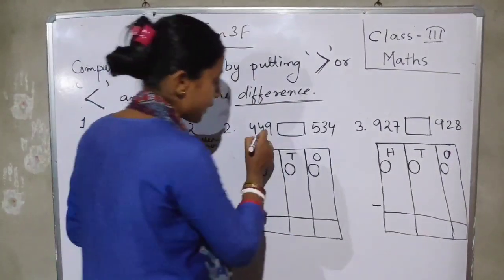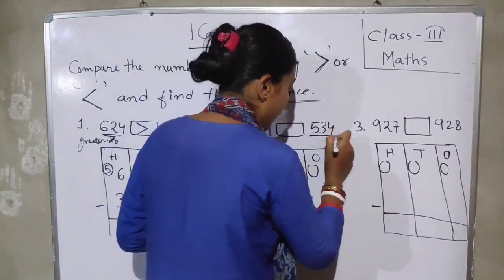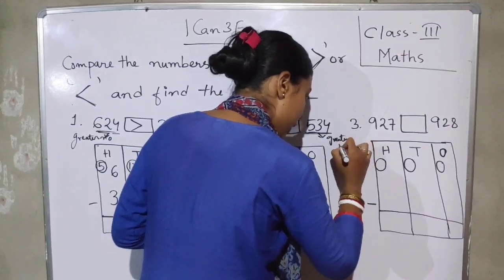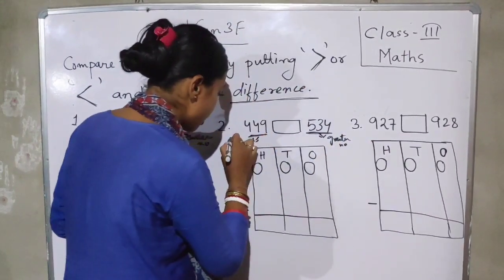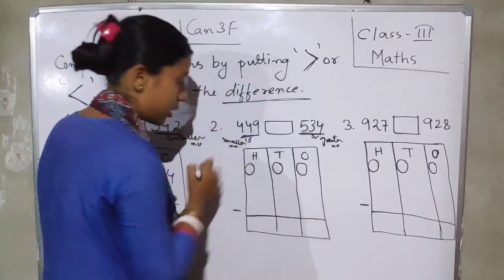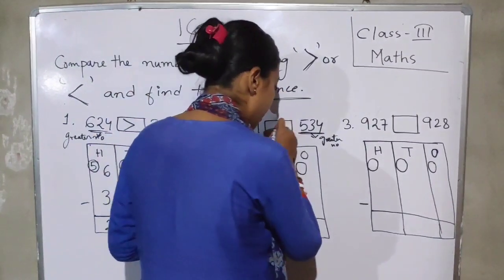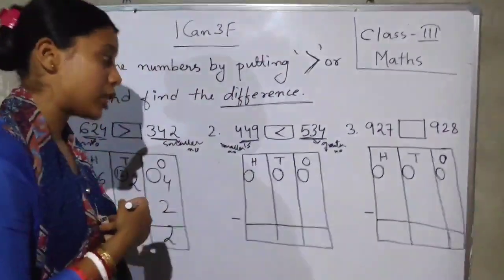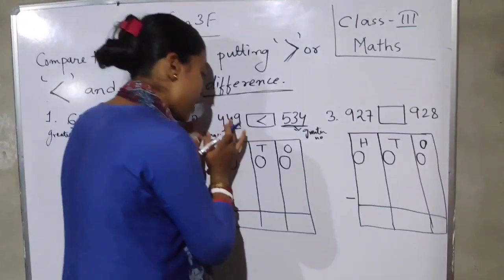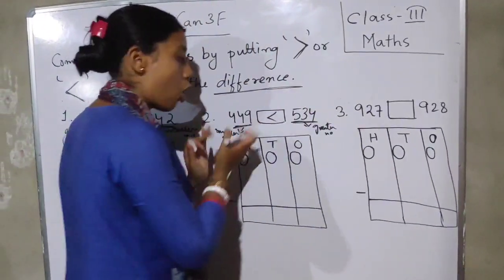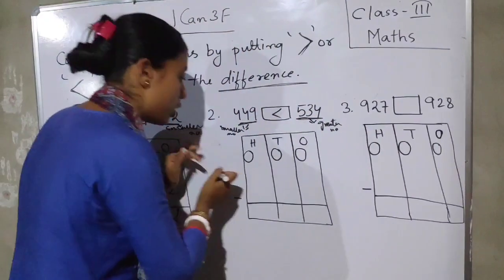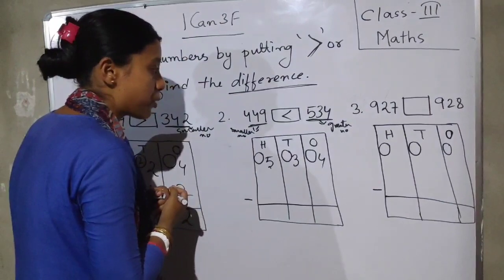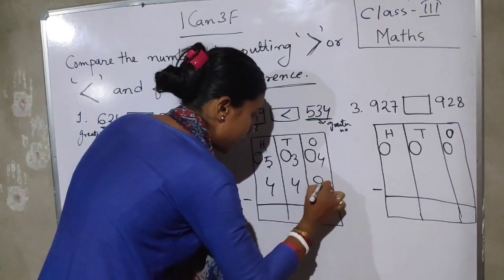Let's do question number 2. You see: 449 and 534. Which one is the greater number? 534 is the greater number and 449 is the smaller number. So the sign goes this side because 534 is greater. Now again, we subtract the smaller number from the greater number — not the greater from the smaller. So: 534 minus 449.